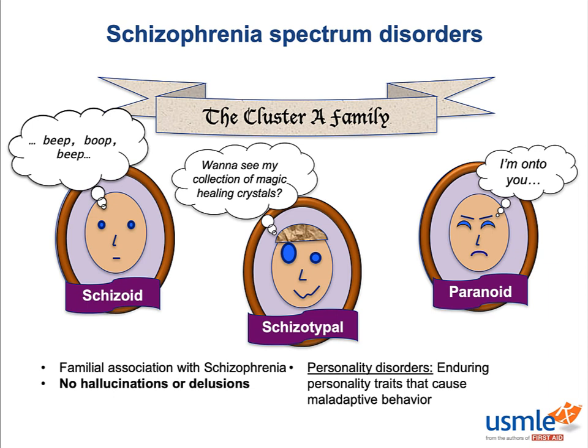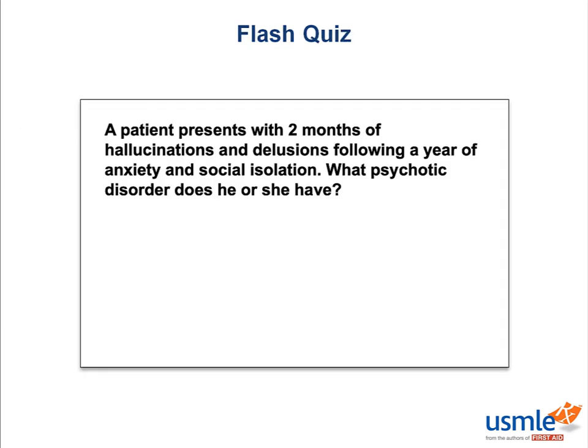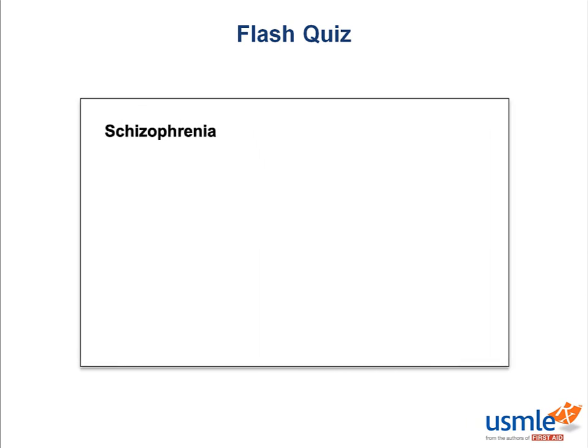Let's take a timeout for a flash quiz. If a person presents with two months of psychotic symptoms followed by a year of anxiety and social isolation, what kind of psychotic disorder do they have? The point of the question was to see who counted the prodrome as part of the duration. While some might have jumped to schizophreniform because the florid psychotic symptoms lasted two months, note that the prodrome of the patient acting different has lasted for almost a year — well above the six-month time requirement for schizophrenia.